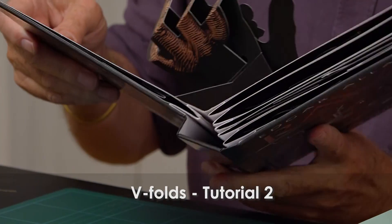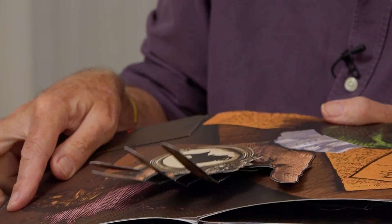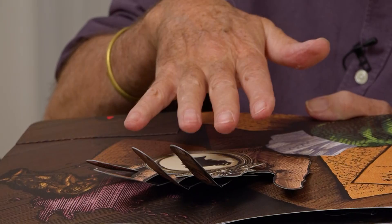And the V-fold is the type of V-fold where the angles on the V-fold are the same as the angles on the page. So when the page is flat, the V-fold lies flat.